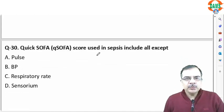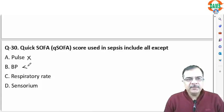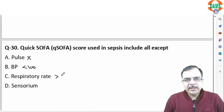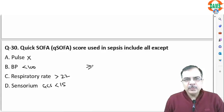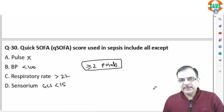Question 29: the Quick SOFA score used in sepsis does not include pulse rate. It includes: BP less than 100 mmHg, respiratory rate of 22 per minute or more, and Glasgow Coma Scale less than 15. If two or more points are present, it is indicative of sepsis.